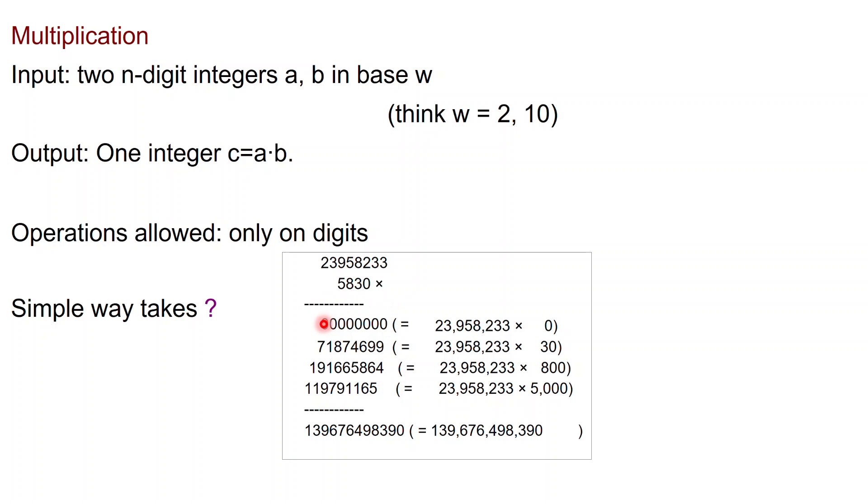We have all studied a simple way, a simple algorithm to multiply numbers. If I want to perform this multiplication, I can do a table like this. The first row in this table is the first number that I'm multiplying times the first digit of the second number. Then I have the first number times the second digit, and so on. Each time you shift by 1, and then you sum these things.